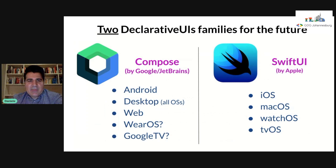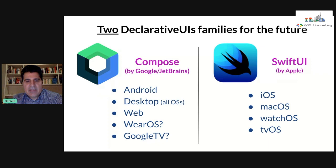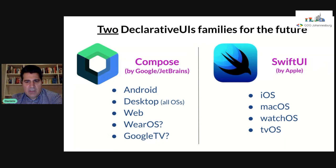In the future we expect two families of declarative UIs. One family would be Jetpack Compose by Google and JetBrains — able to build apps for Android, desktop (Linux, Windows, macOS — already in preview), and web. We hope Compose for Web will progress quickly and have a good usable version by end of the year. We can also expect it for Wear OS and Google TV.